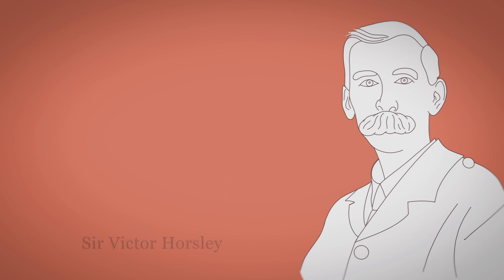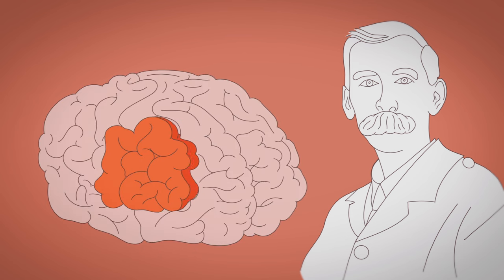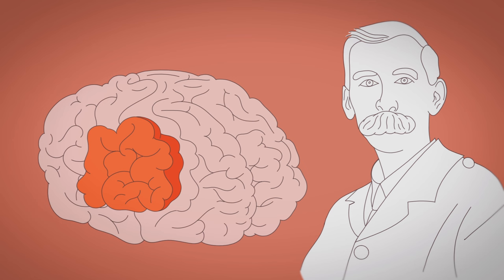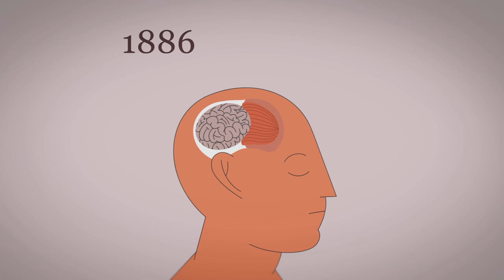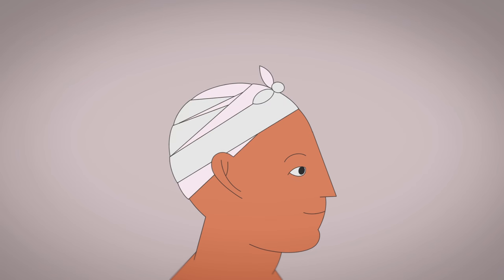Others, like Sir Victor Horsley, suspected that removing damaged parts of the brain might stop a patient's seizures. In 1886, he performed a craniotomy, temporarily removing part of a patient's skull to extract scarred brain tissue. Not only did his patient survive, but his seizures improved.